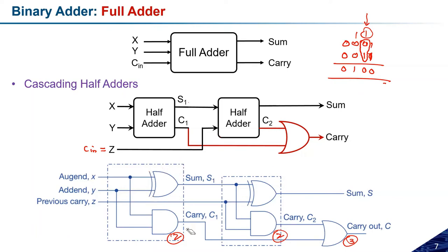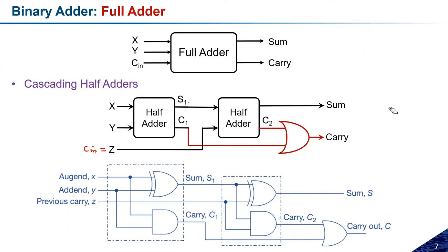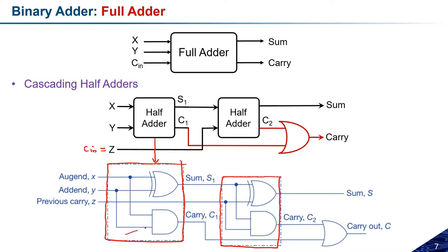Instead of just cascading half adders, we can design the full adder directly. The expanded diagram shows the actual circuit replacing the half adder blocks — one XOR gate and one AND gate per half adder. The sum is connected to one input of the second stage, the previous carry Z is connected to the other input, and the two carry outputs are OR-ed together. This is the fully expanded version of the cascaded half adder circuit.